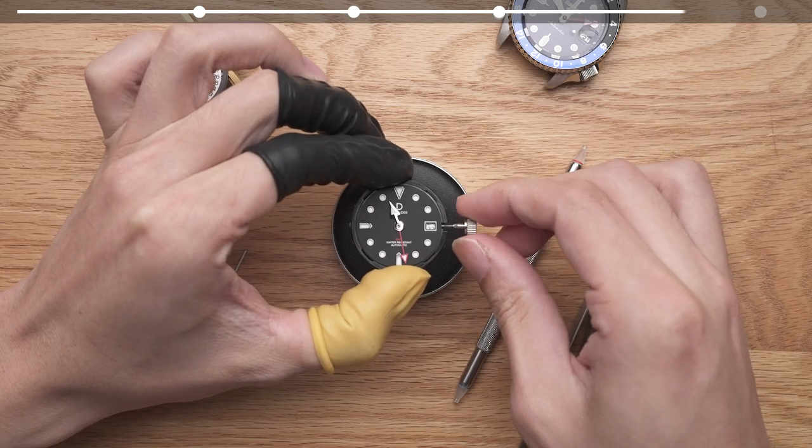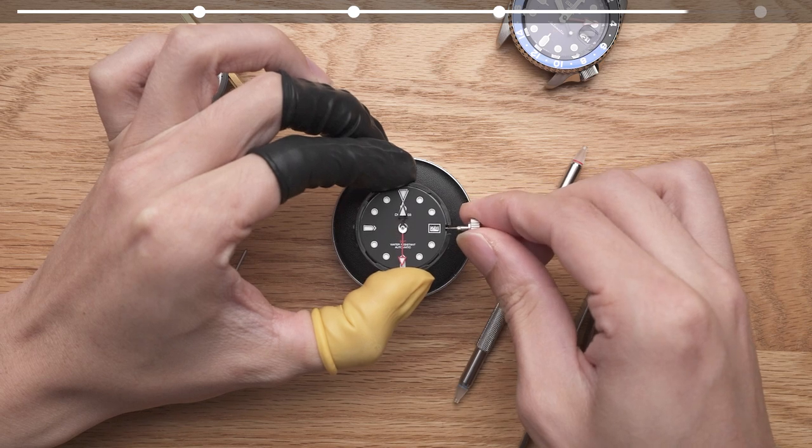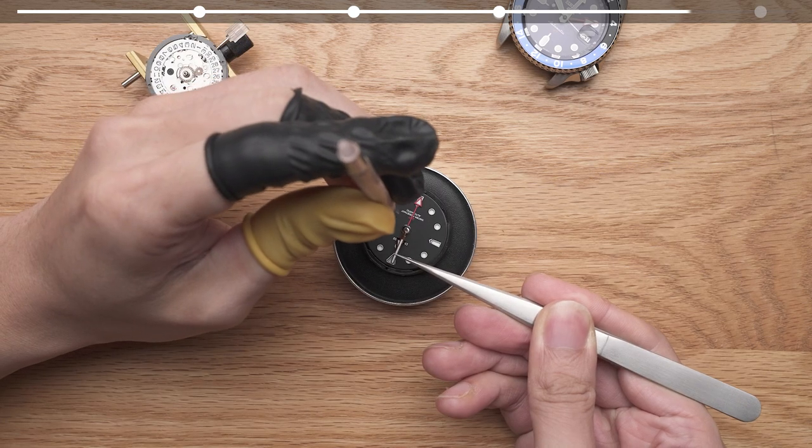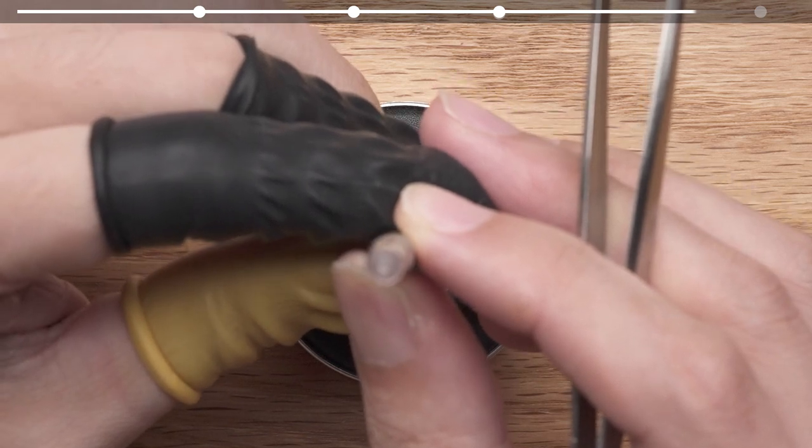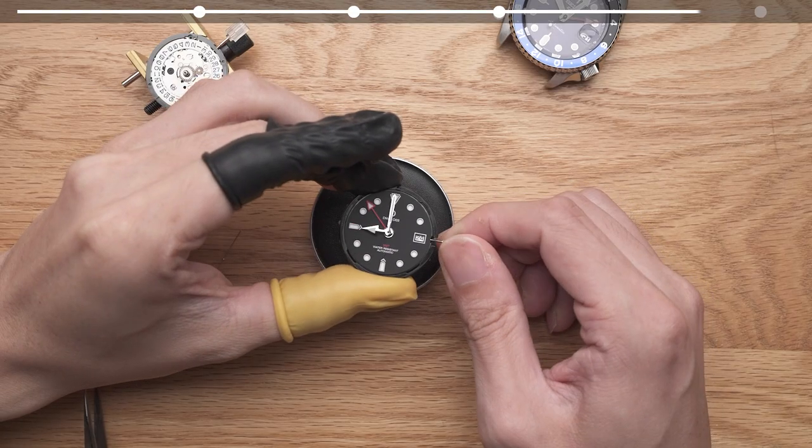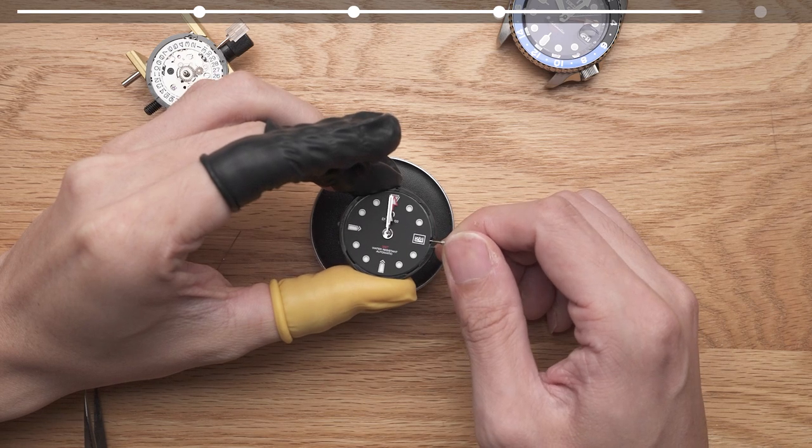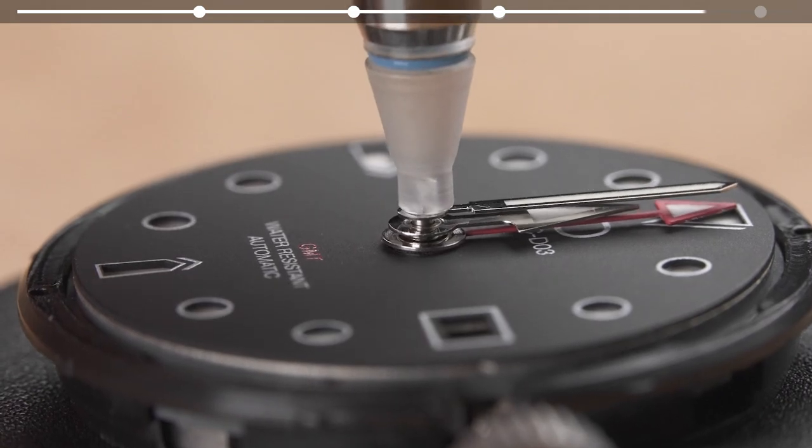Now, onto the minute hand. Set the hour hand to 12 o'clock, and then install the minute hand pointing at the 60 minute mark. Loosely attach it to check the alignment at 3, 6, 9 and 12 o'clock. Then we can apply pressure to set the minute hand.